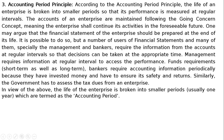The third principle is the Accounting Period Principle. According to this principle, the life of an enterprise is broken into smaller periods so that its performance is measured at regular intervals. Accounts are maintained following the going concern concept, meaning the enterprise shall continue its activities in the foreseeable future. Although financial statements could theoretically be prepared at the end of an enterprise's life, many users — especially management and bankers — require information at regular intervals so that decisions can be taken at the appropriate time.